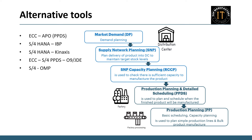Within the ECC–APO PPDS integration, the forecast emerges as the output of demand planning. Subsequently, during the supply network planning run, SNP plan orders are generated, forming the rough cut executable plan. These orders are then transformed into PPDS orders, initiating the scheduling and sequencing process.